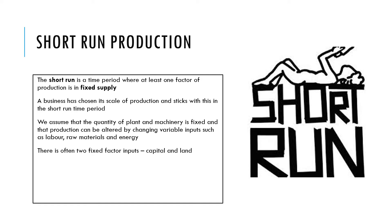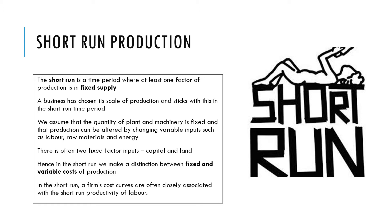There are two types of factor input: fixed and variable. The ones often said to be in short supply are the fixed factor inputs — capital and land. In the short run, how much a firm produces — its productivity — is very closely linked to the workers and labor.